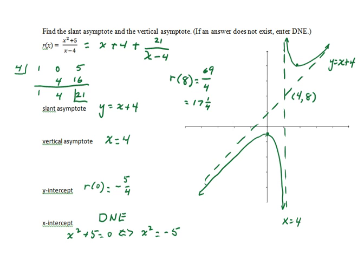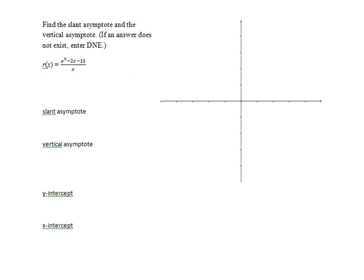We've got one more example. It's a little different from the first two because it is the quantity x squared minus 2x minus 15, all divided by a monomial. So we get x minus 2, dividing each of those monomials by x, minus 15 divided by x. The slant asymptote this time is y equals x minus 2. The vertical asymptote is x equals 0, since the denominator is undefined at x equals 0. I'll let the scale have 2 units for each tick mark, and this time we've got y equals x minus 2.